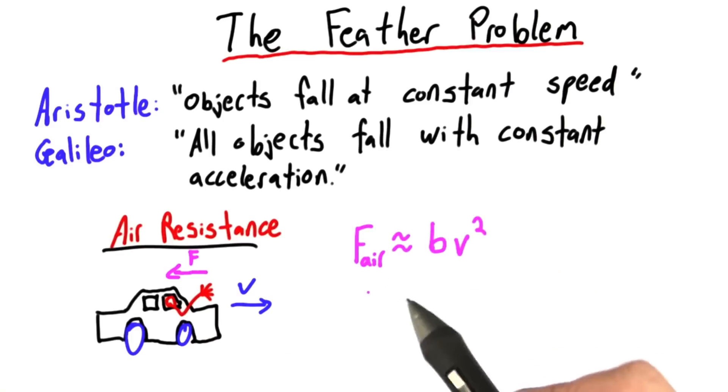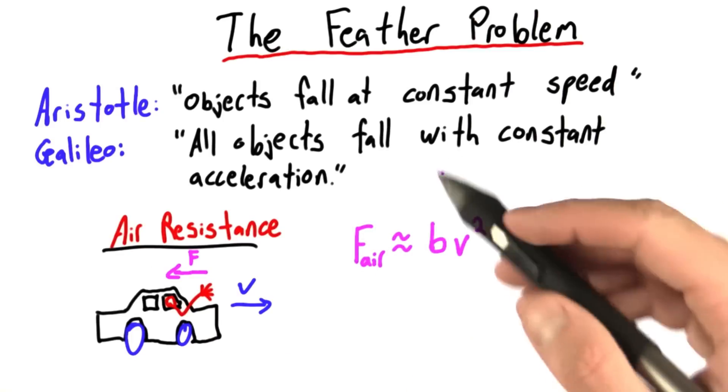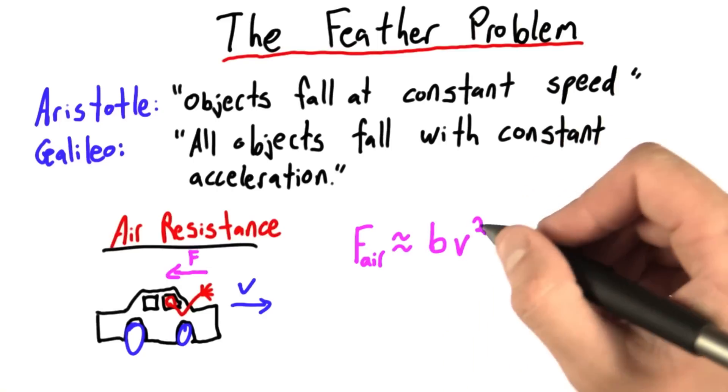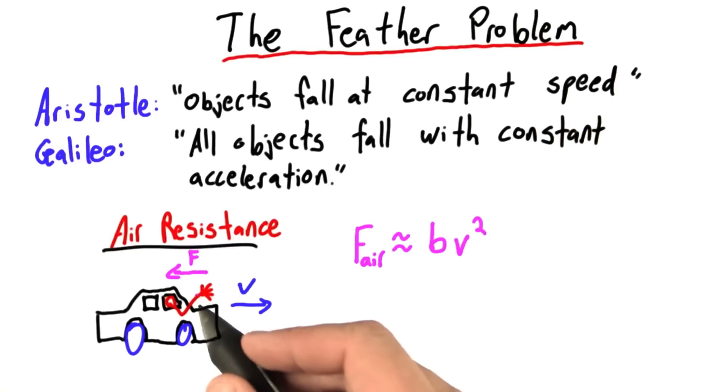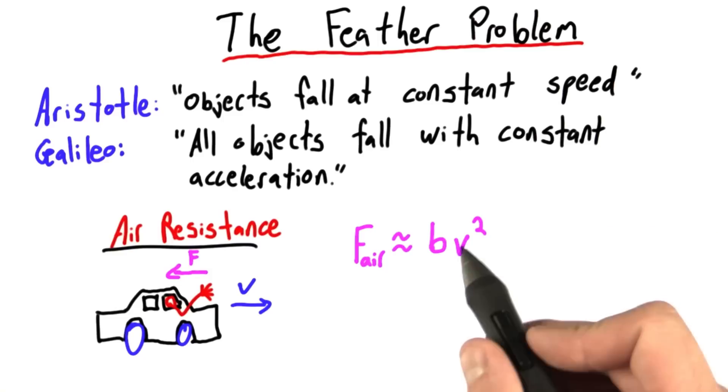The size of this air resistance force is more or less approximated by an equation like this. Here V is the speed you're traveling at and B is some number that depends on maybe the size and shape of your hand or the feather. As you can see, this force grows bigger as your velocity increases.